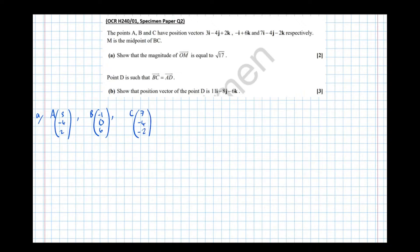So it says show that the magnitude of OM is equal to root 17 where M is the midpoint of BC. Well if it's the midpoint it's the average of the two points, the mean of the two points, which means that M equals B plus C over 2 equals a half of B and C together. So minus 1 plus 7, 0 minus 4 and 6 minus 2 equals a half of 6 minus 4, 4 equals 3 minus 2, 2.